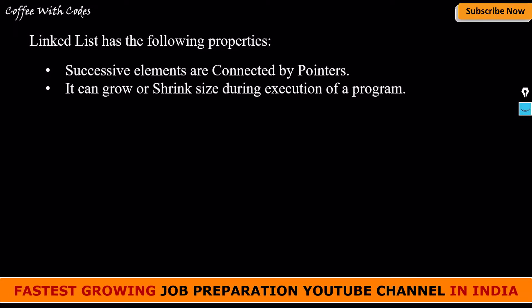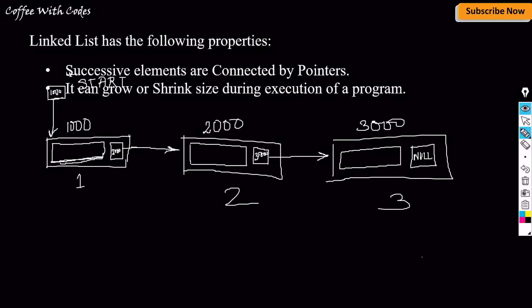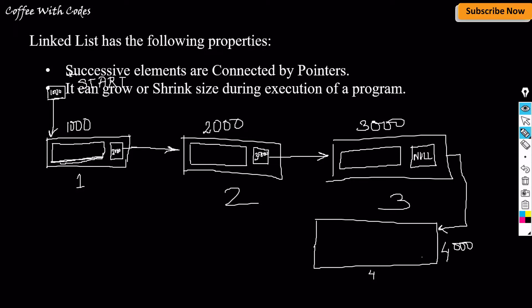The second property says: it can grow or shrink in size during execution of a program. The biggest advantage of a linked list is it can grow and shrink. If we need to add another node, we create a fourth node, suppose at address 4000, and store that address in the previous last node's pointer in place of null. We can also delete the first or last node to decrease the size.